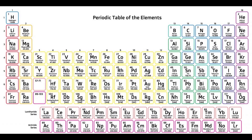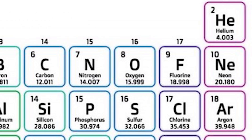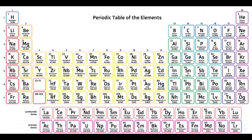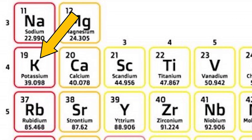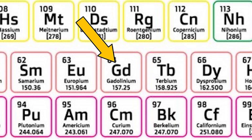Many of the elemental symbols make perfect sense to the English speaker, like the letter C representing carbon, or the letters NE representing neon. Others are misleading or will have you wondering where they came from at all, like the letter K representing potassium. And although GD is an elemental symbol, AU actually represents gold. GD represents gadolinium.